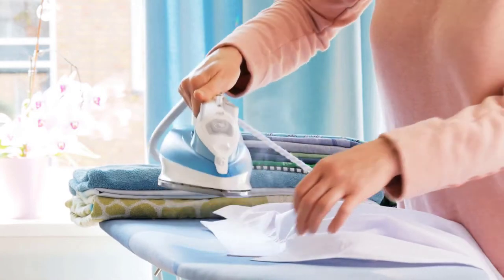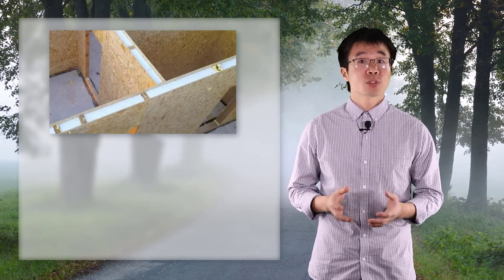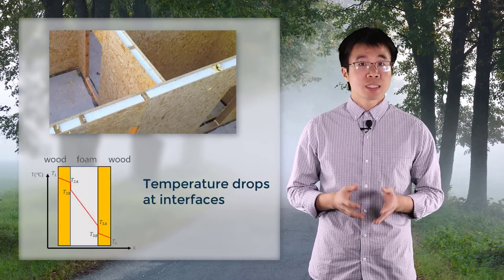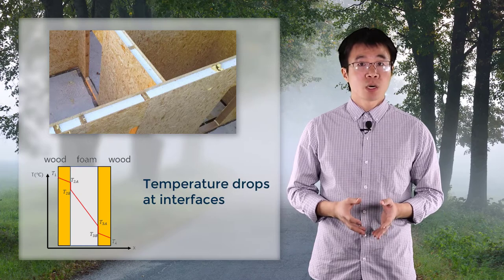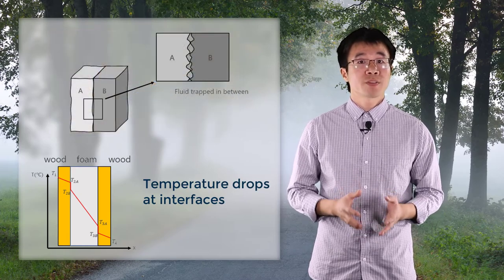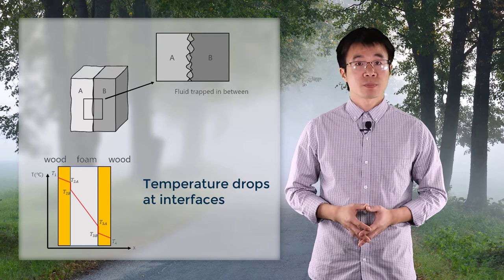Ideally, if two surfaces are in perfect thermal contact, the temperature will be continuous through the interface without an abrupt change. But in practical problems, there is a temperature drop between two touching surfaces. This happens because it's typically not possible to ensure that the two surfaces are perfectly smooth and in contact.